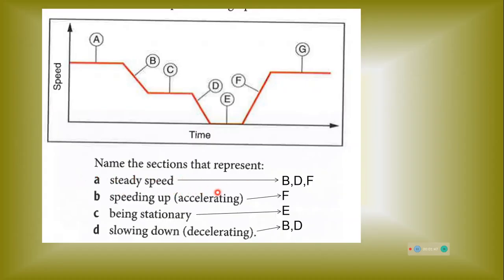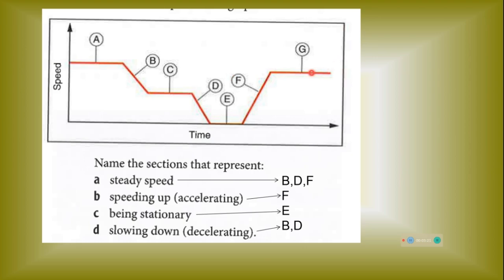Name the sections that represent steady speed: sections A, C, and G represent constant speed, where acceleration is zero. Section F shows increasing speed with a straight line, meaning uniform acceleration. Sections B and D represent slowing down — uniform deceleration, where speed is decreasing. Section E is where the object is stationary. When speed slopes upward in a straight line, it is uniform acceleration. When speed slopes downward, it means speed is decreasing — this is uniform deceleration.